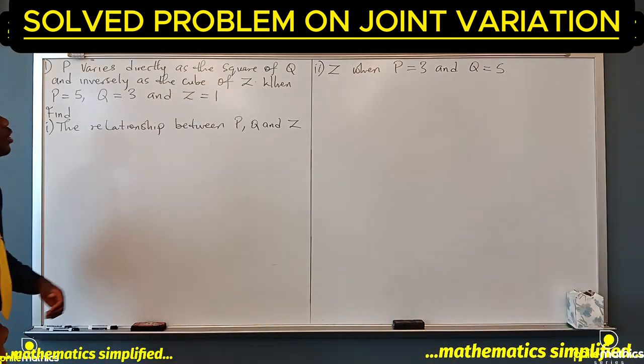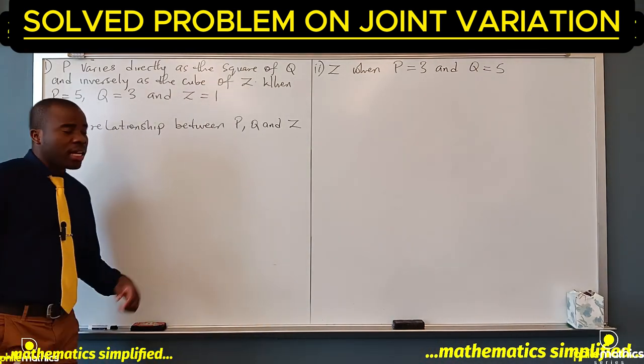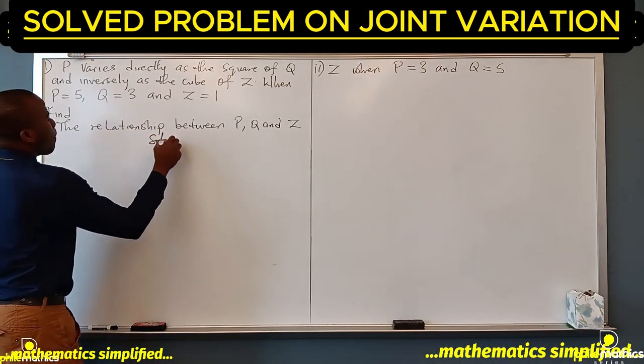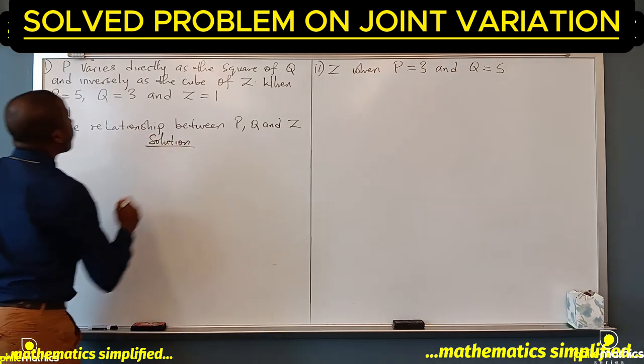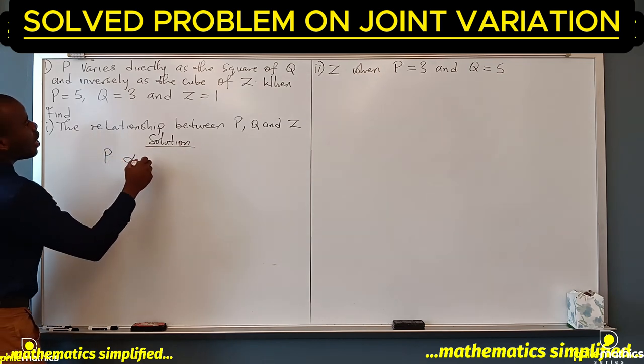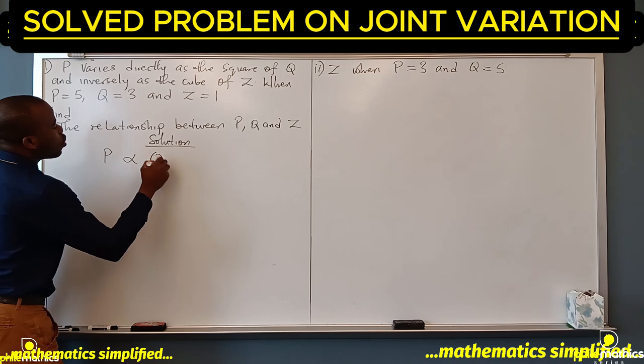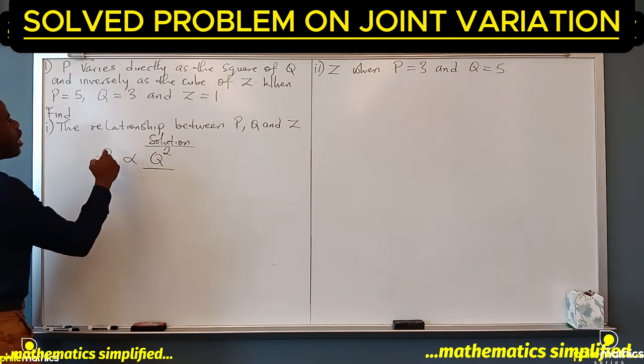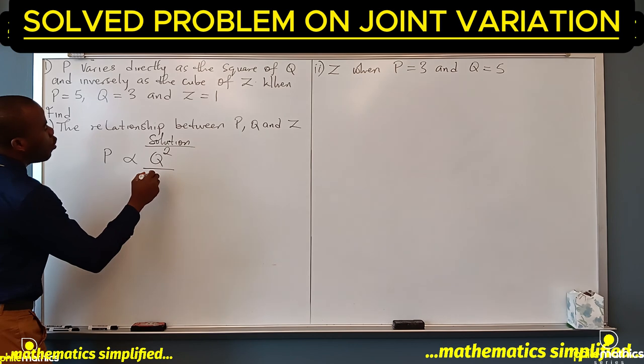The first thing we'll do is find the proportionality constant. So, p varies directly as the square of q and inversely as the cube of z.